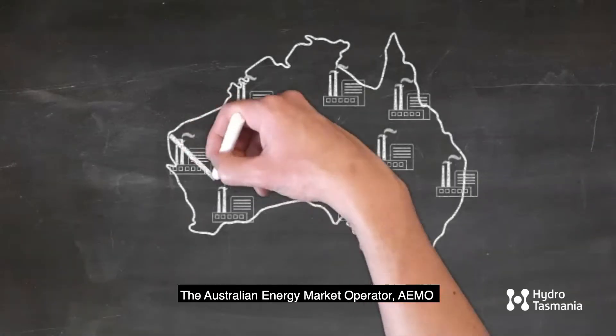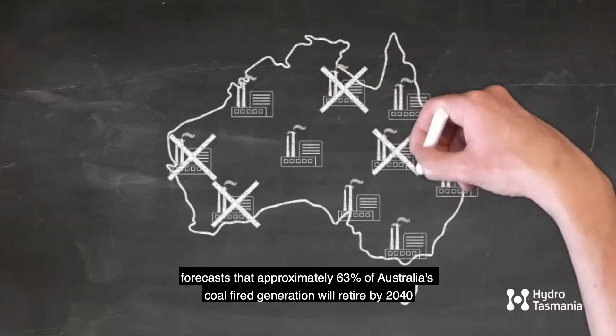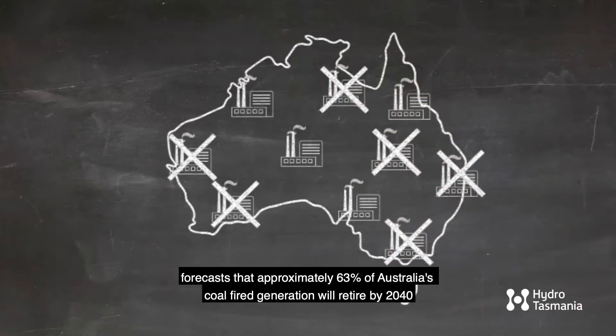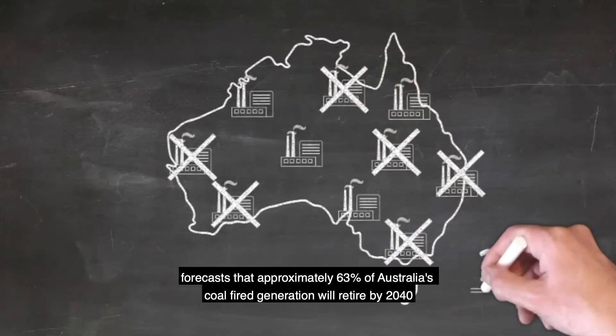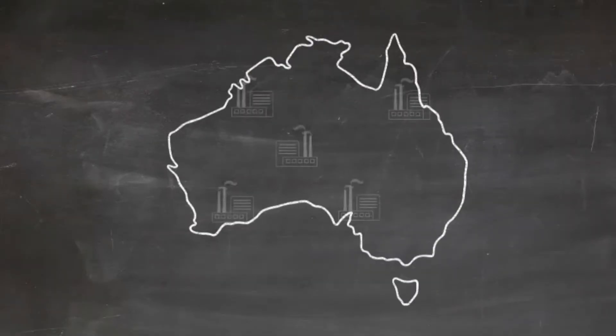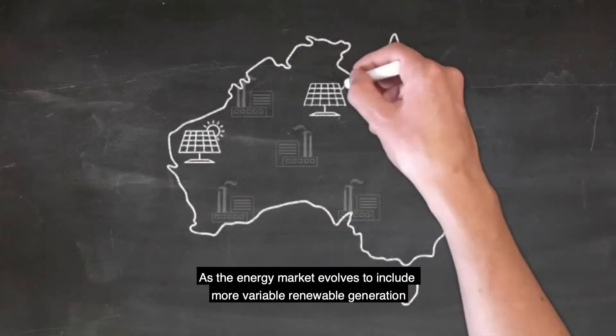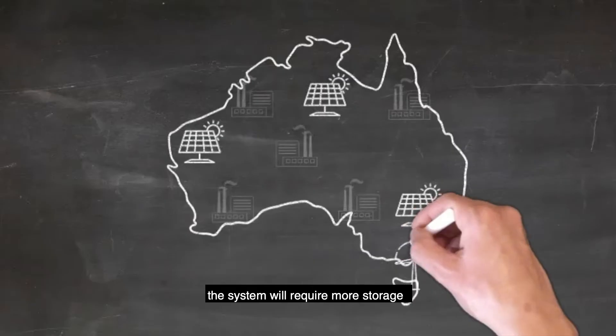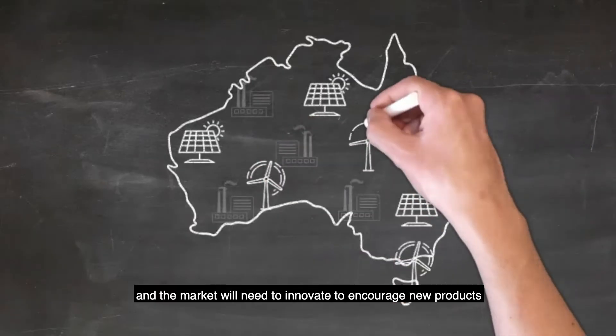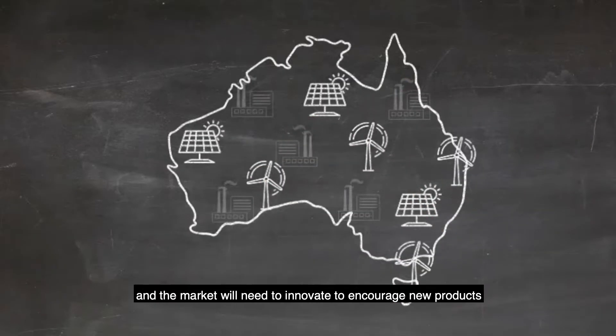The Australian Energy Market Operator, AEMO, forecasts that approximately 63% of Australia's coal-fired generation will retire by 2040. As the energy market evolves to include more variable renewable generation, the system will require more storage and the market will need to innovate to encourage new products.